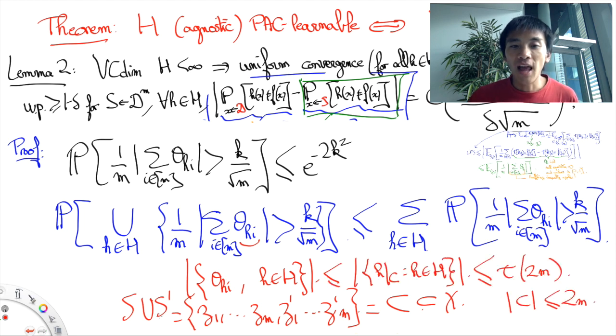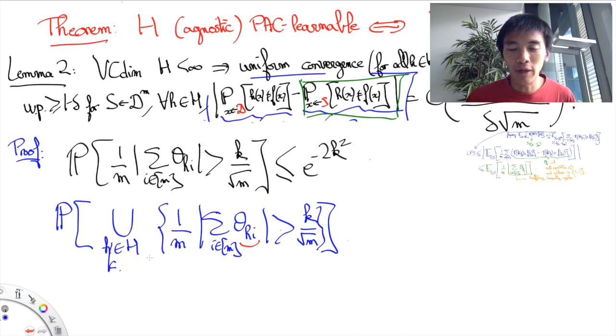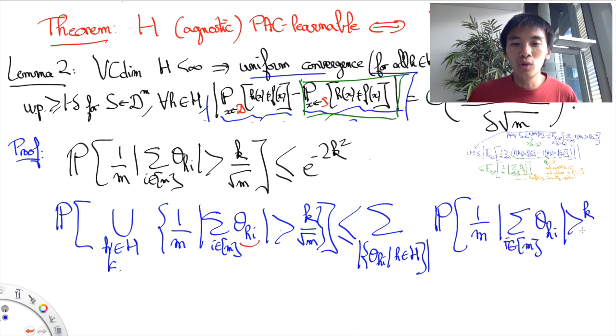The number of such combinations is actually upper bounded by the number of restrictions to the set of features that we are considering in this bound, namely S union S prime. Now, S union S prime has at most 2M elements, so the number of restrictions of hypothesis H of H to the set S union S prime is no more than tau of 2M. And now we can take the union bound with a right-hand side which is not going to be too large, it's going to be tau of 2M multiplied by the Hoeffding's term.